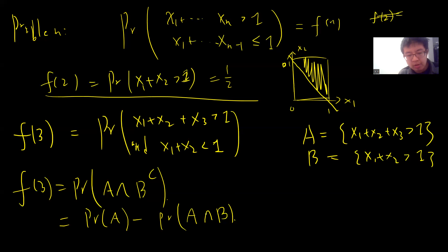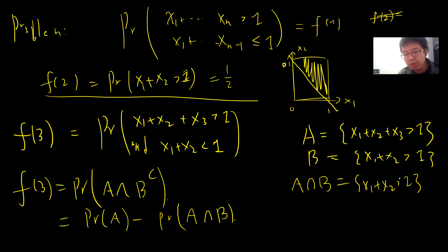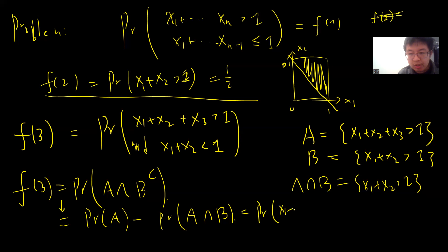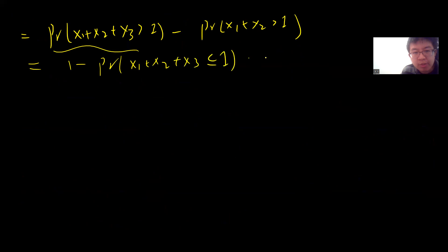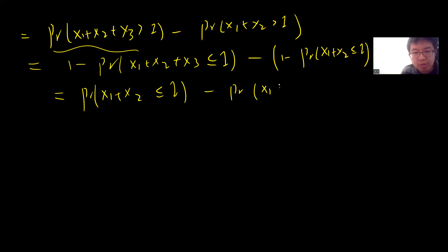The probability of A∩B^c equals P(A) minus P(A∩B). Now, P(A∩B) is just P(X1+X2 > 1), because if X1+X2 > 1 then A is automatically satisfied — X1+X2+X3 is certainly greater than 1. So this simplifies to P(A) minus P(B). We rewrite using complements: it becomes P(X1+X2 ≤ 1) minus P(X1+X2+X3 ≤ 1).